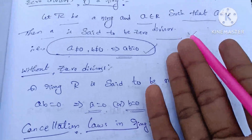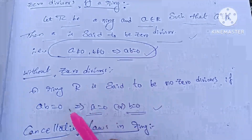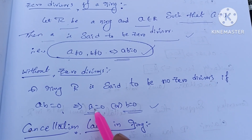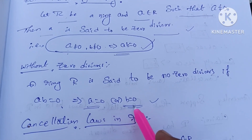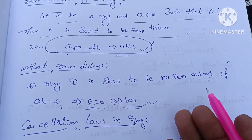If ab is equal to zero, then a equals zero and b is equal to zero — that is the without-zero condition.